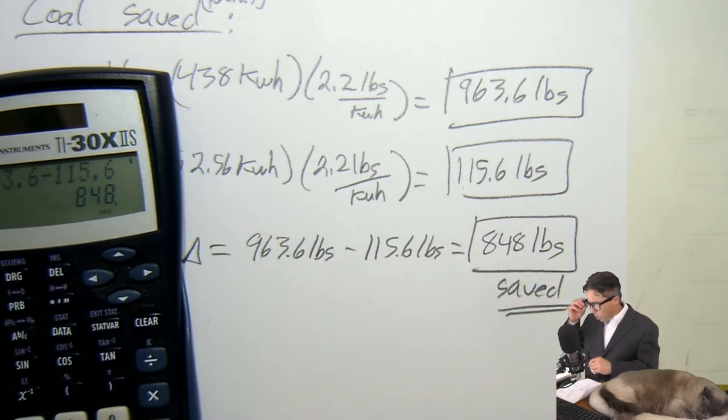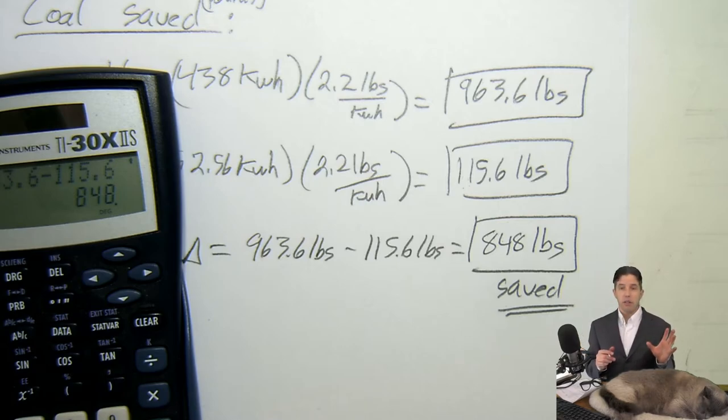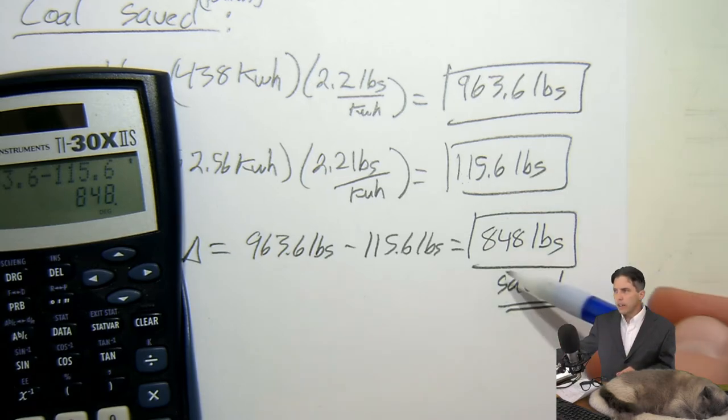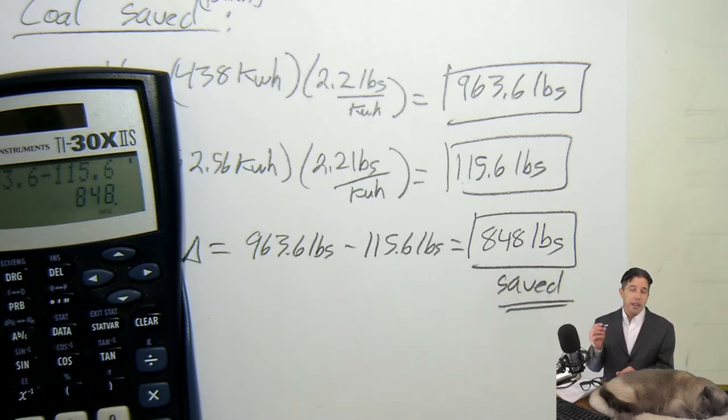So one of the themes here, notice all I did is I took one single light bulb and I replaced it, right? That's it. Nothing else changed except that one light bulb. And by me doing that, I save 850 pounds of coal every year. So now imagine I did that to all the bulbs in my house, and now imagine everybody else in the United States does the same thing. And what happens is we start to realize you could save so much coal that we could actually shut off many coal fire power plants. We wouldn't even need them. That's how much coal you could save by just swapping light bulbs.